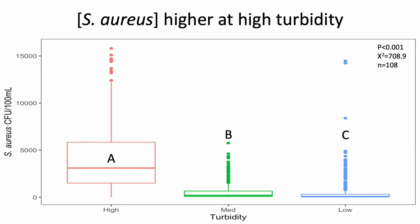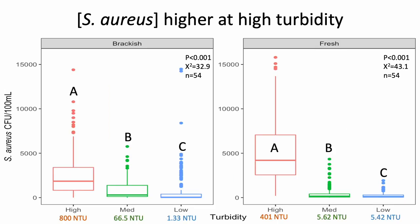Here are my results. This is my initial concentration of staph for both fresh and brackish waters. My x-axis is the turbidity and my y-axis is the staph concentration. We can see that it's significantly different across the turbidities. Breaking it down into brackish and fresh, we can see it's still significantly different across the turbidities, even where values appear close in number.